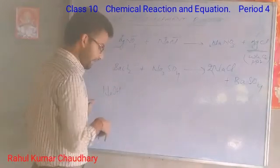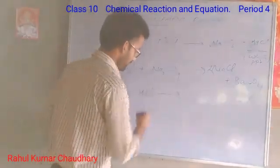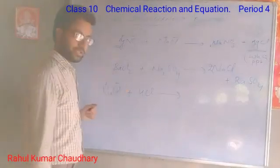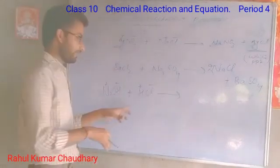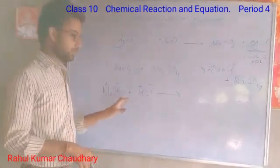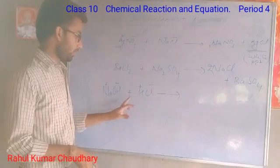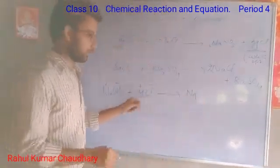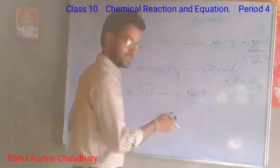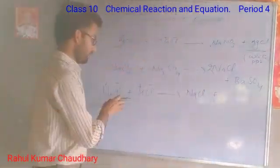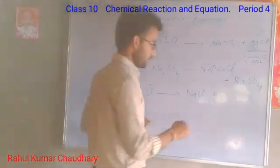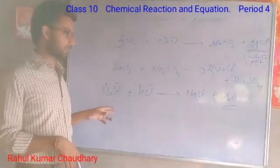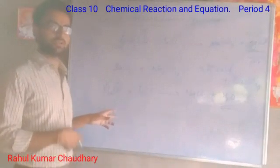Next example: NaOH (sodium hydroxide) plus HCl. Here, Na⁺ ion and OH⁻ ion are present, along with H⁺ and Cl⁻. The sodium ion and hydrogen ion exchange places — sodium ion combines with Cl⁻ to form NaCl, common salt, and hydrogen ion combines with OH⁻ to make H2O, water. This is also an example of a double displacement reaction.